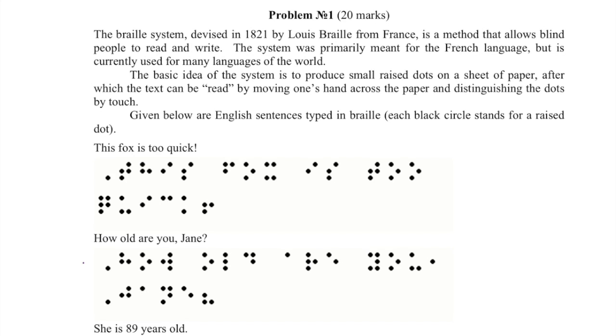Question one, worth 20 marks like all questions in the paper, is about Braille. The Braille system, devised in 1821 by Louis Braille from France, is a method that allows blind people to read and write. The system was primarily meant for French but is currently used for many languages. The basic idea is to produce small raised dots on paper which can be read by moving one's hand across the paper and distinguishing the dots by touch. Given below are English sentences typed in Braille, where each black circle stands for a raised dot.